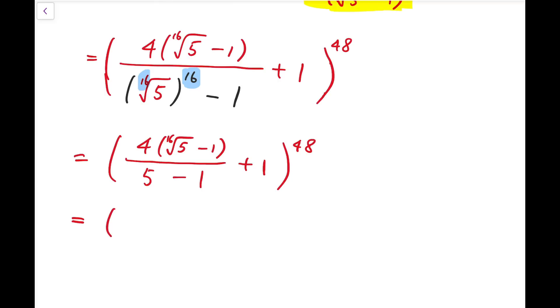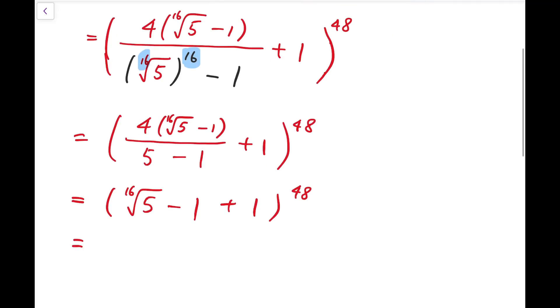So that means I'll only have the 16th root of 5 minus 1 for the fraction. And inside the bracket, that will be these two terms added by 1, and all to the power 48. And so that means I have the 16th root of 5, all to the power 48.